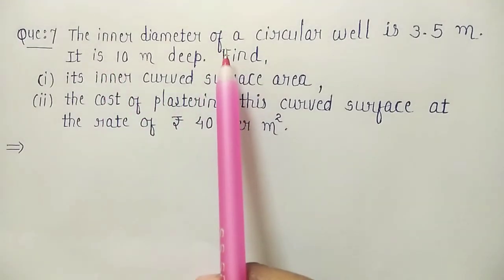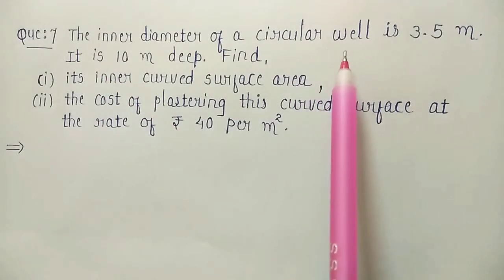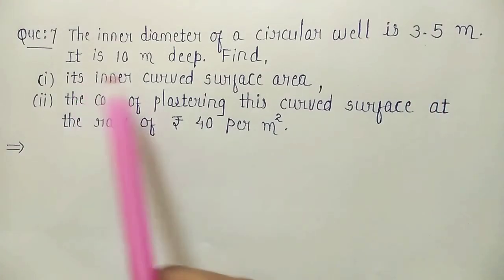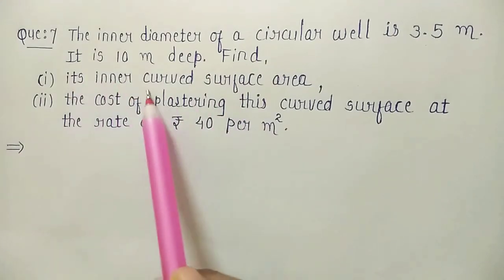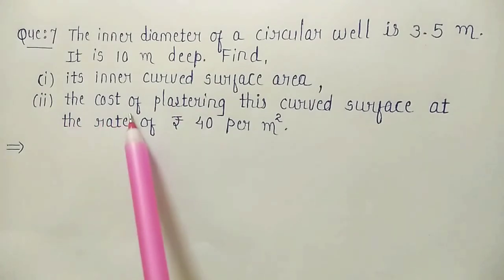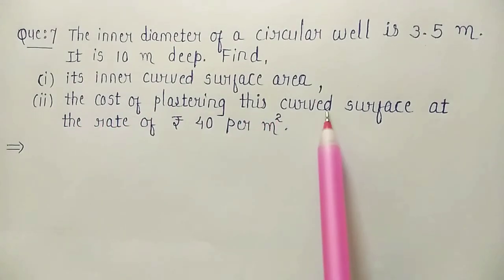The inner diameter of a circular well is 3.5 meter. It is 10 meter deep. Then we have to find two things. First, inner curved surface area and second thing, the cost of plastering this curved surface area at the rate of rupees 40 per meter square.